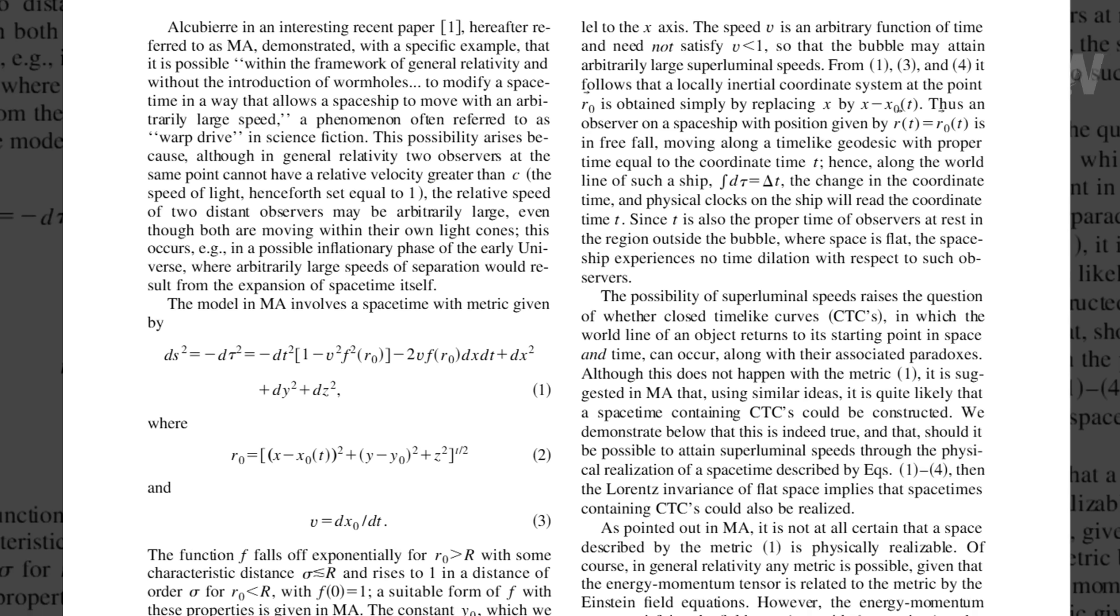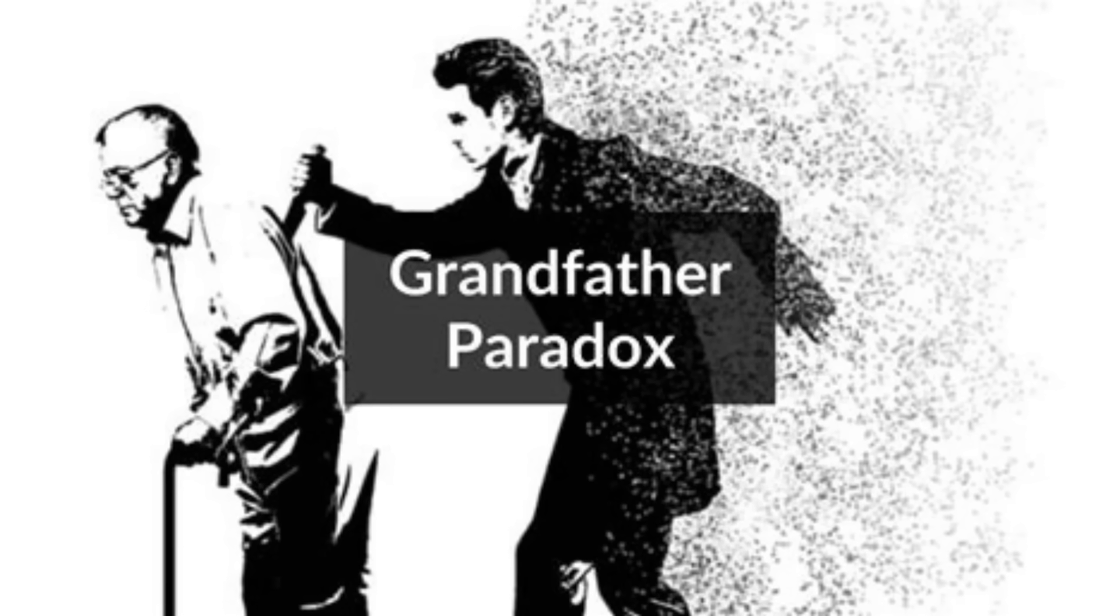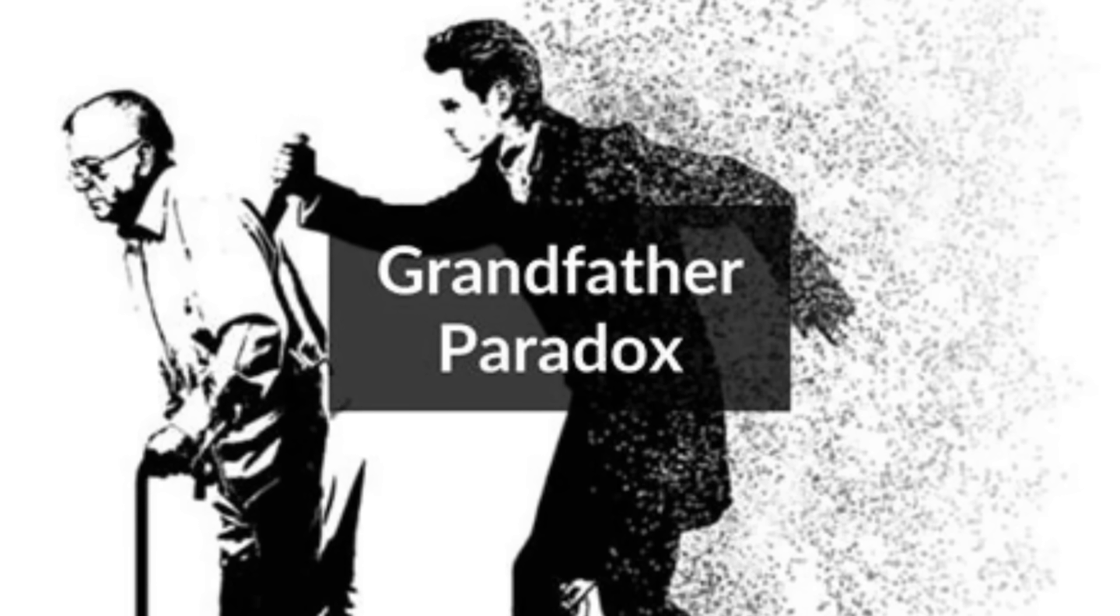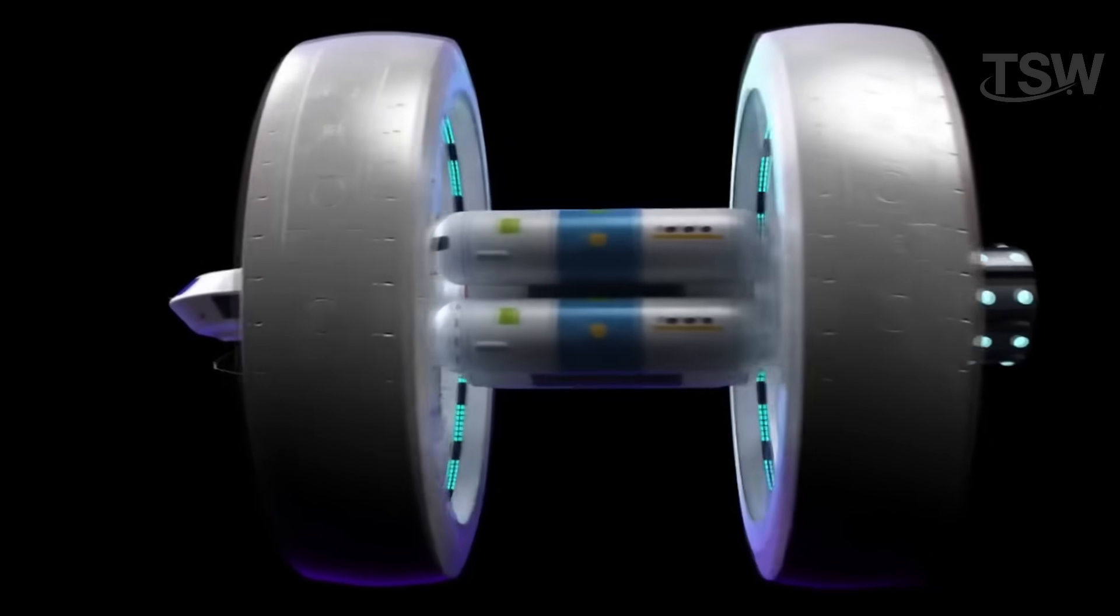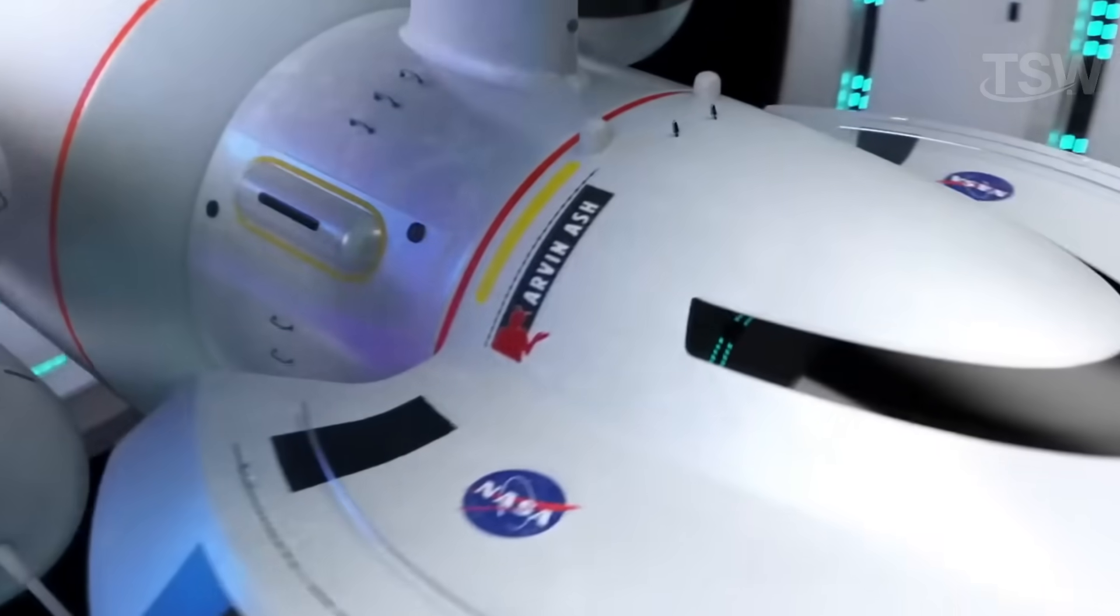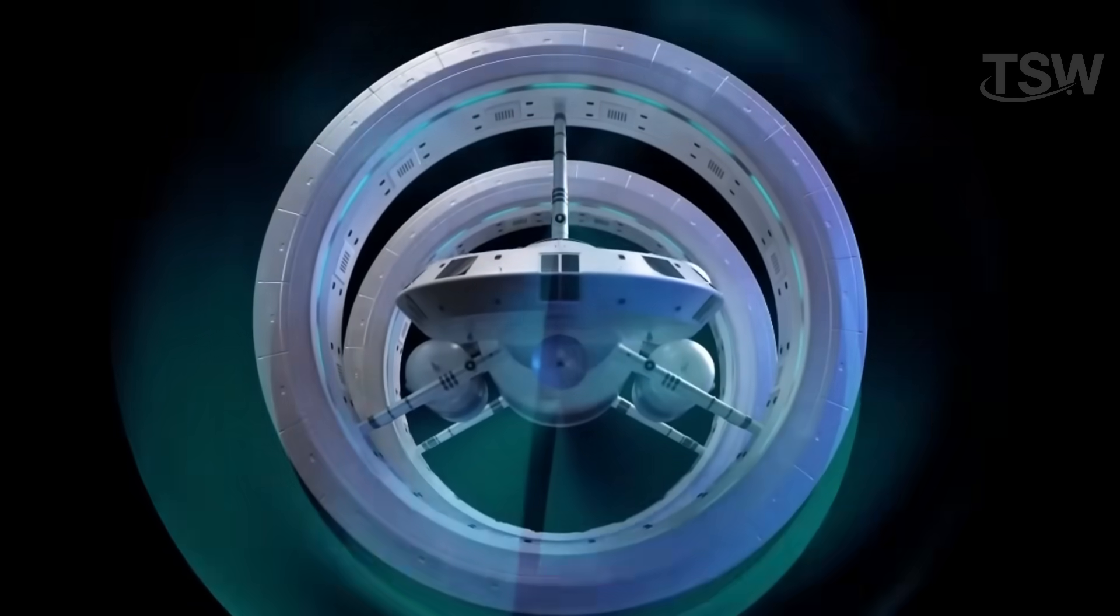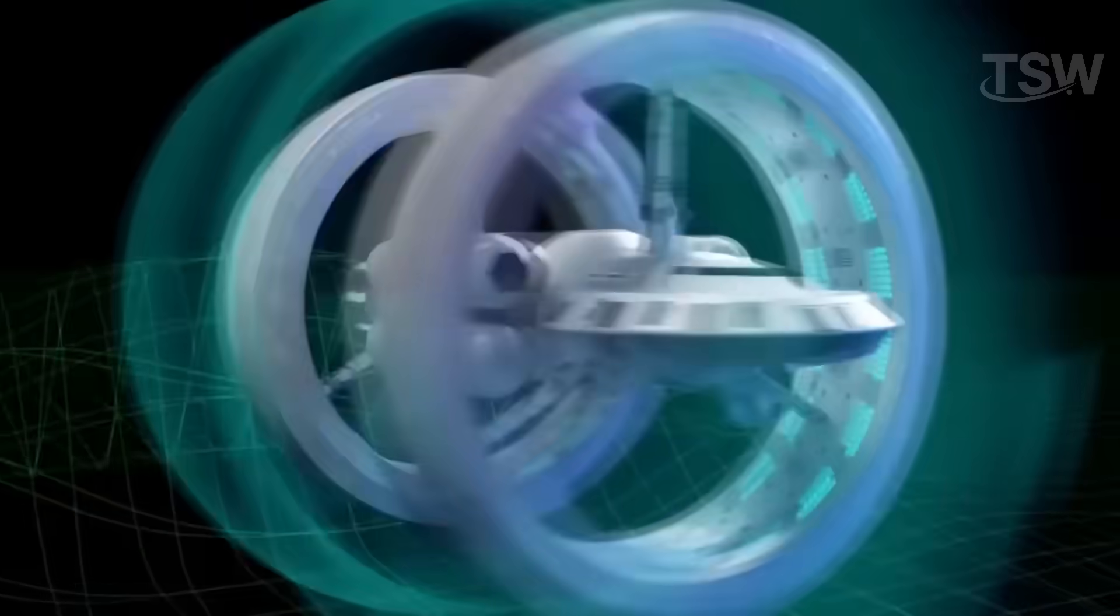While this sounds exciting and extremely useful in science fiction, it raises serious concerns in physics, like the famous grandfather paradox, where someone goes back in time and accidentally prevents their own existence. Because of these bizarre possibilities, many scientists believe that if warp drives do become possible one day, nature itself might find a way to prevent time travel, perhaps by making it physically impossible to stabilize two bubbles moving in opposite directions.